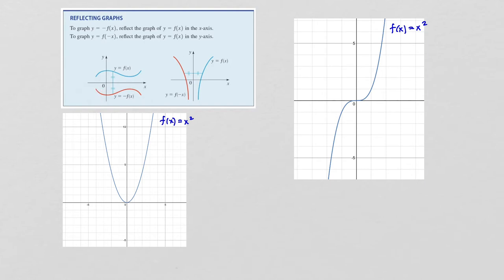And if you do f(-x), this will be a reflection across the y-axis. So if your function looks like this, f(-x) is just going to reflect it across the y-axis so that you will have a mirror image on the other side.